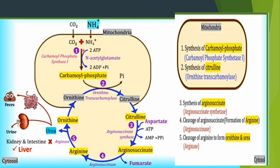This reaction is irreversible and is the rate-limiting step of the urea cycle. It is allosterically regulated. CPS1 is mainly dependent on N-acetylglutamate for its activity — N-acetylglutamate allosterically activates this enzyme. The second step is the synthesis of citrulline.